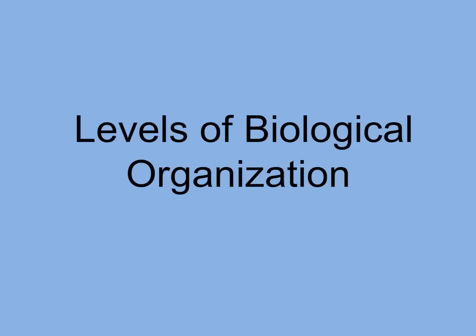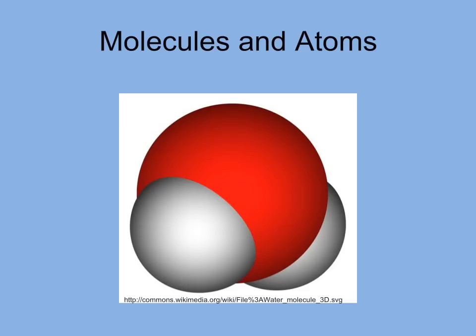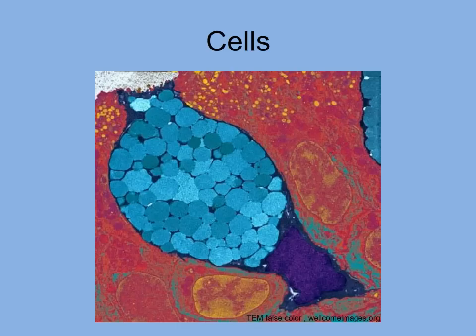We can look at life from different levels, from the atoms that make up parts of the cell to the earth as a whole. An atom is the smallest unit to retain chemical properties. Atoms are arranged into molecules — this water molecule consists of two hydrogen atoms bonded to one oxygen atom. Cells, the basic units of life, are composed of molecules.